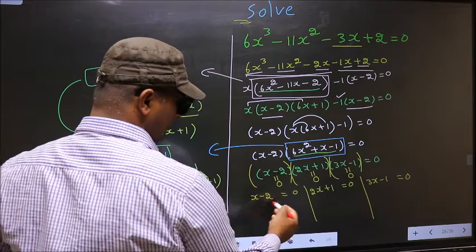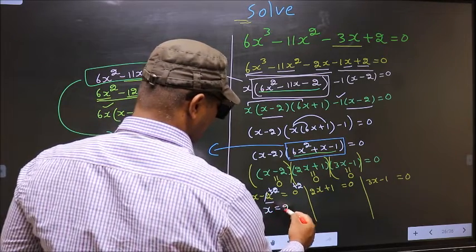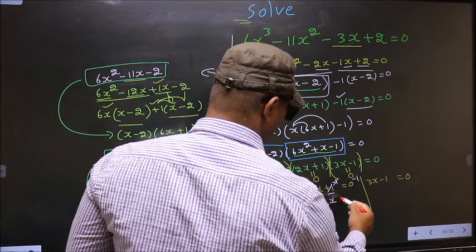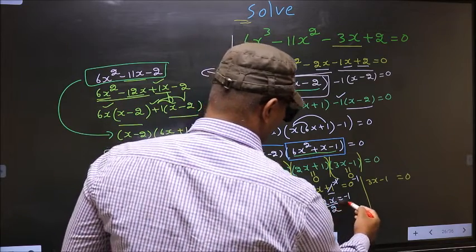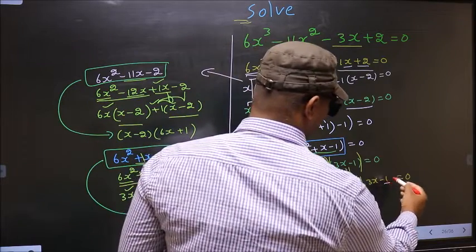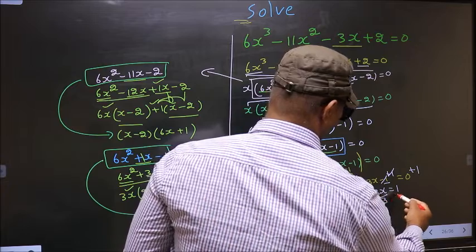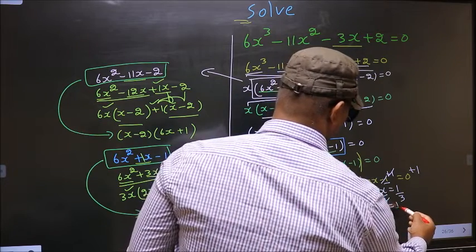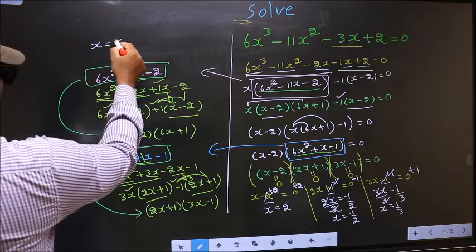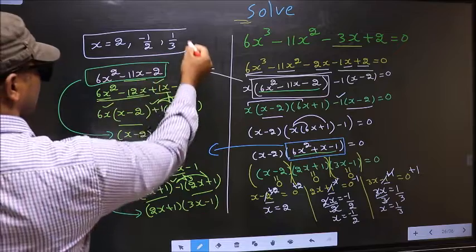To get x from x minus 2 equal to 0, add 2 to both sides; the minus 2 cancels out and you get x equal to 2. For 2x plus 1 equal to 0, subtract 1 to get 2x equal to minus 1, then divide by 2 to get x equal to minus 1 over 2. For 3x minus 1 equal to 0, add 1 to get 3x equal to 1, then divide by 3 to get x equal to 1 over 3. So the x values are 2, minus 1 over 2, and 1 over 3. This is our answer.